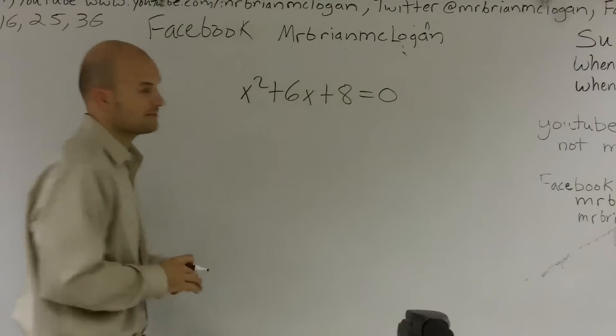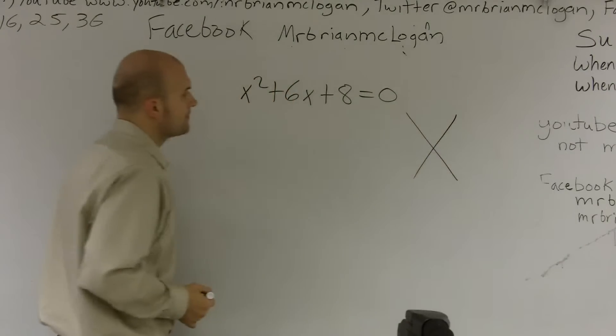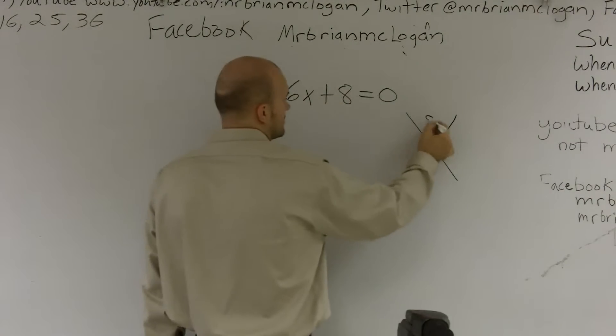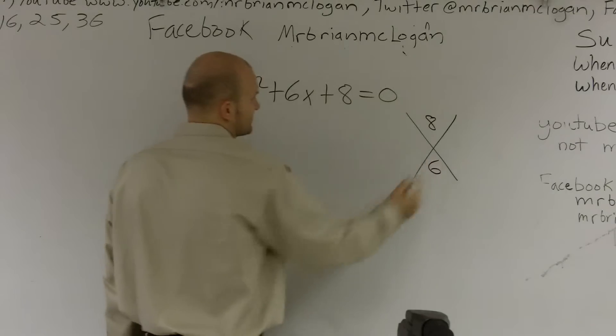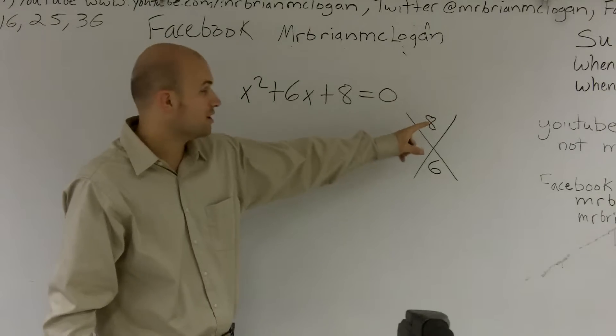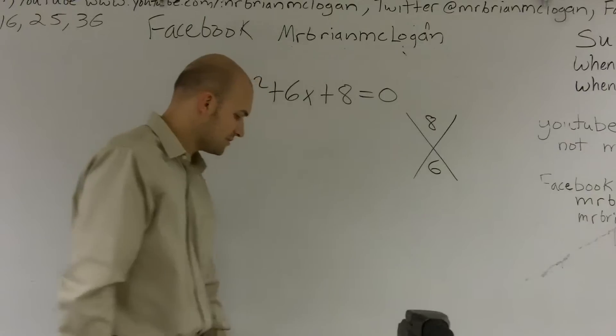So the first thing I'm going to do is I'm going to see if I can factor this. And a lot of times we use the little box method. And you can say, what two numbers multiply to give you 8, but then add to give you 6. And there's really not too, there's not any numbers. You have 2, 4, 8, and 1. None of those numbers, when multiplied, give me 6. So therefore, this is not factorable.